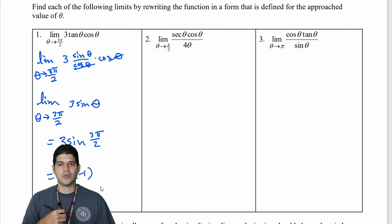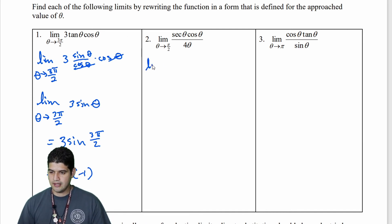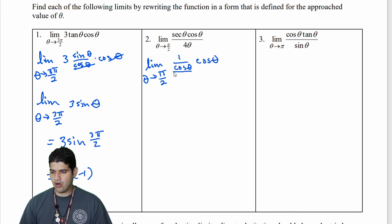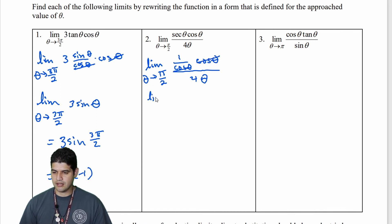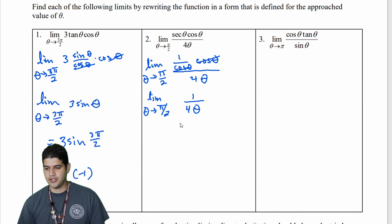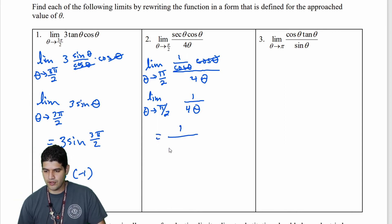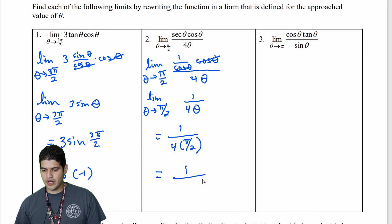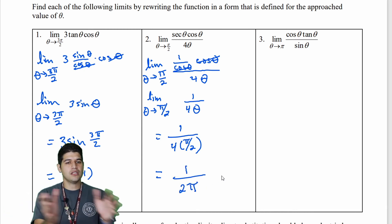Moving to question 2, we'll try a reciprocal identity. The limit as theta approaches π/2 of sec(θ) · cos(θ) over cos(θ). We rewrite secant as 1/cos θ using the reciprocal identity, so we have (1/cos θ) · cos θ over cos θ. The cosines divide out, leaving the limit as theta approaches π/2 of 1 over 4θ. Substituting: 1 over (4 · π/2) = 1 over 2π.